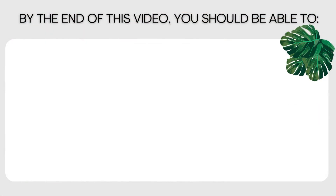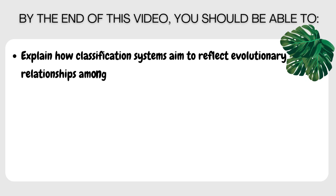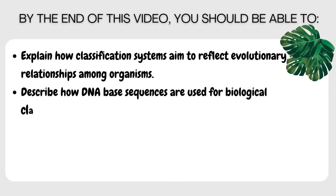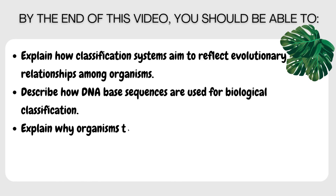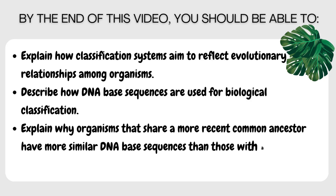By the end of this video, you should be able to: explain how classification systems aim to reflect evolutionary relationships among organisms; describe how DNA-based sequences are used for biological classification; and explain why organisms that share a more recent common ancestor have more similar DNA-based sequences than those with a more distant common ancestor.